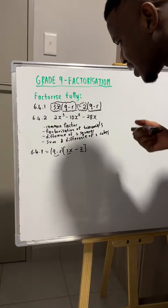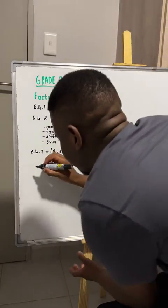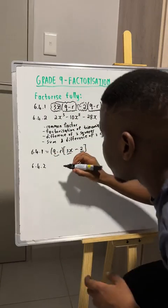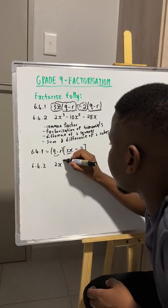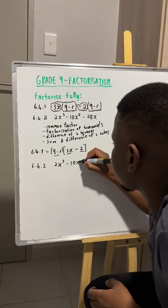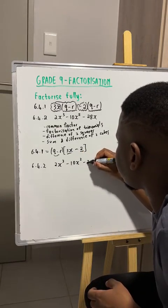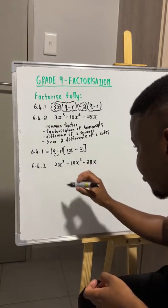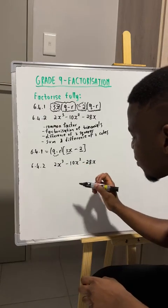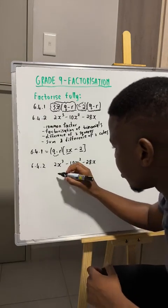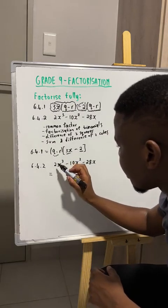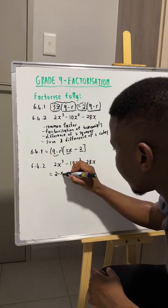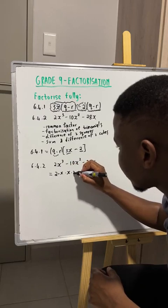Let us move on to the second example. We are given 2x to the power 3, minus 10x squared, minus 28x, and this is what we are required to factorize. I will rewrite this expression in a different way — everything will make sense in a second. We can write 2x³ as 2 multiplied by x multiplied by x multiplied by x.